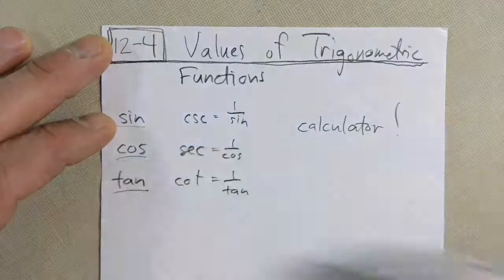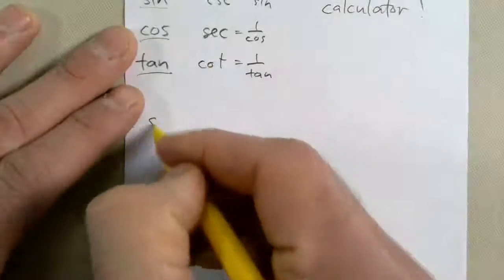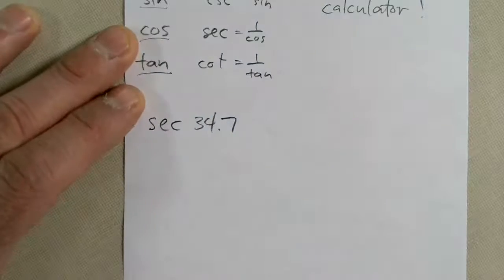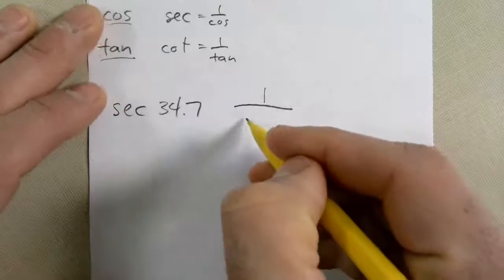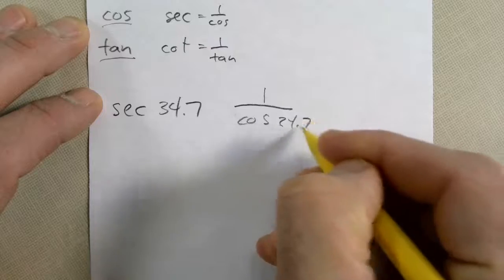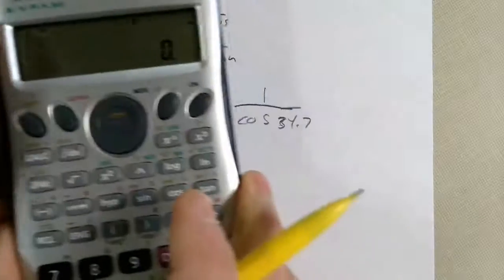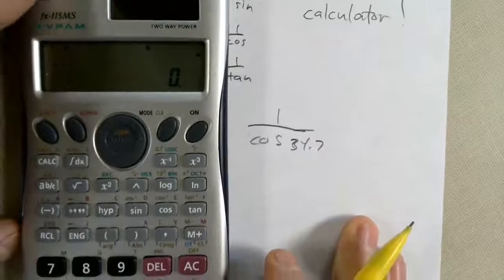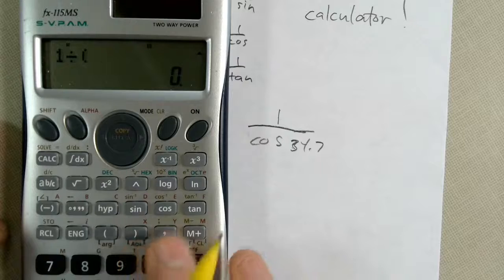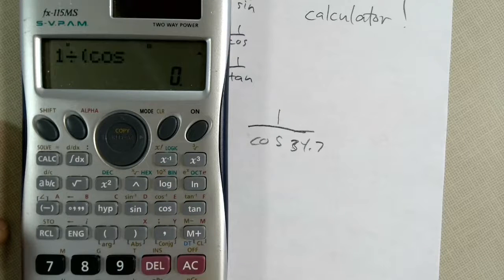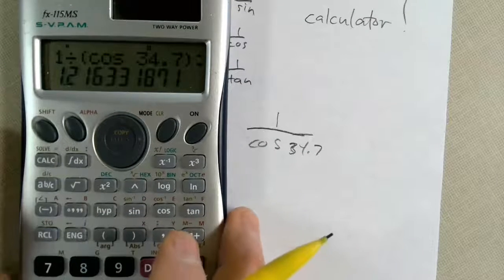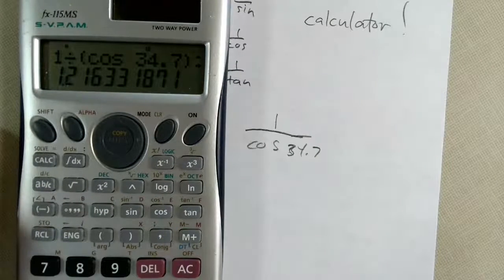For example, I ask you to find the secant of 34.7 degrees. You are going to find one over the cosine of 34.7 degrees. You can do that either by a couple keystrokes or you can use parenthesis and do one divided by the cosine of 34.7. Close my parentheses, enter. And the answer is 1.216.